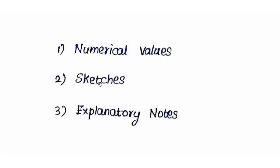Numerical values are just measured values — for example, if we measure 10.56 m, we note 10.56 m, preserving the decimal. Next are sketches — showing topographical features — and explanatory notes, which provide context for the measurements recorded.